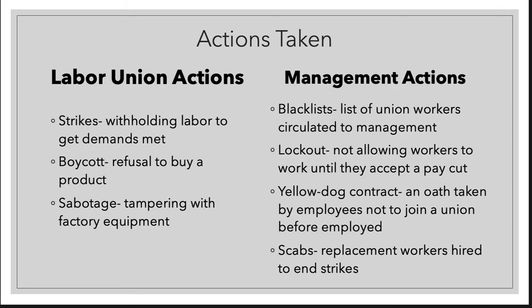On the flip side, what did management do to stop labor unions? First, they created blacklists — lists of workers who had joined unions or caused trouble. These lists were circulated to hiring managers at different workplaces, warning them not to hire those people, effectively blackballing them from ever getting a job.